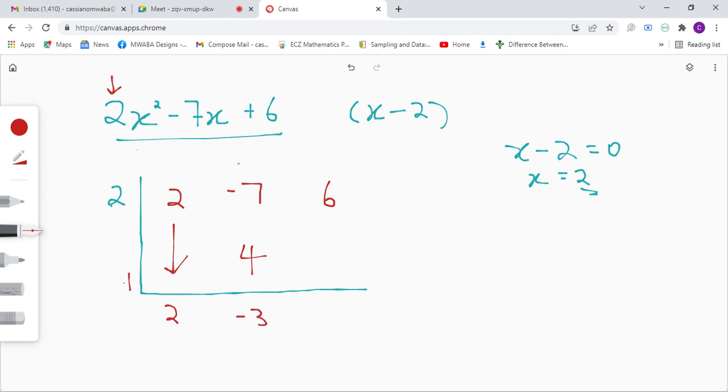Here we're adding, so negative 7 plus 4 gives negative 3, and we say 2 times negative 3 is negative 6. Then 6 plus negative 6, we're going to get 0. So our answer is going to be 2x minus 3.